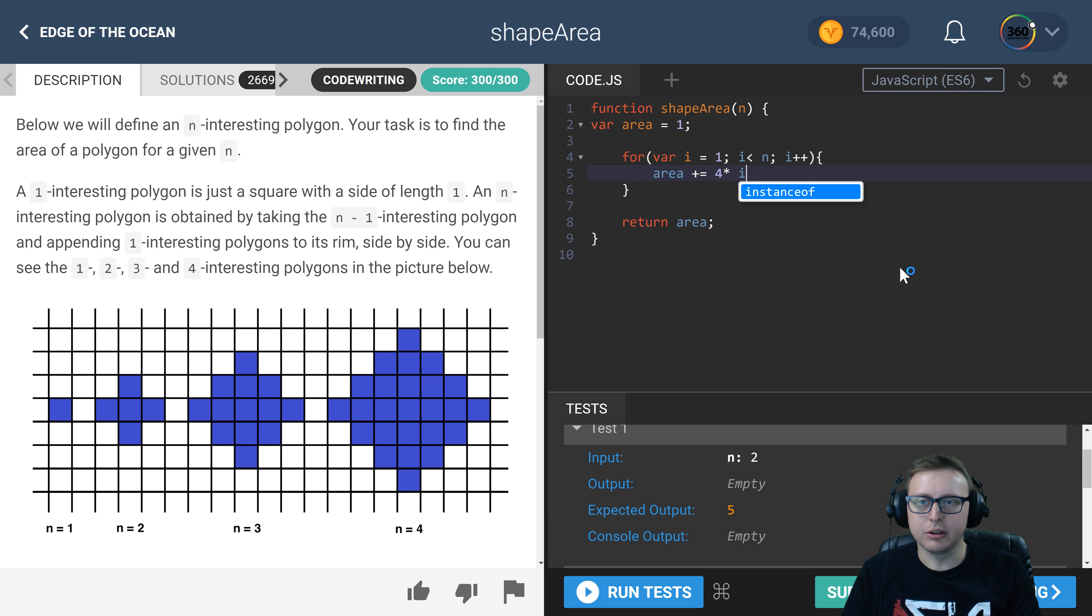Because when we were on two, it added four. When we were on, excuse me, one less rather. So when we were on three, it added eight, and so it continues on, right? And then we add that to the area.